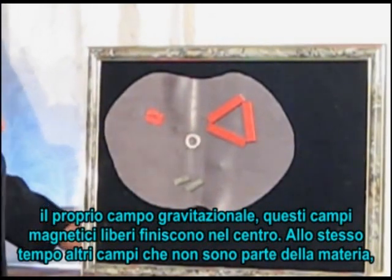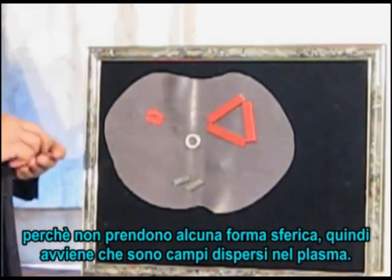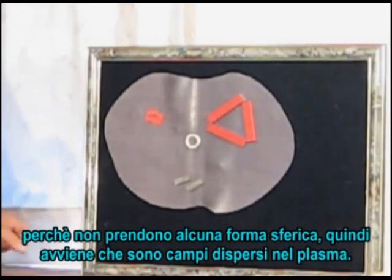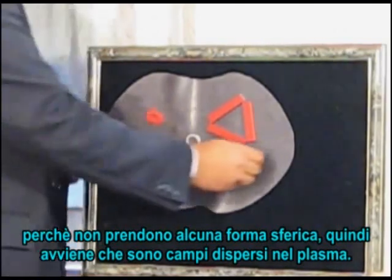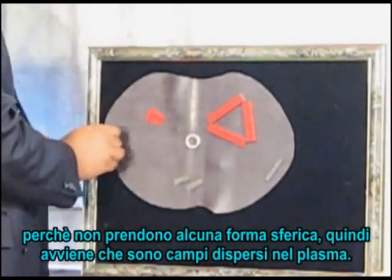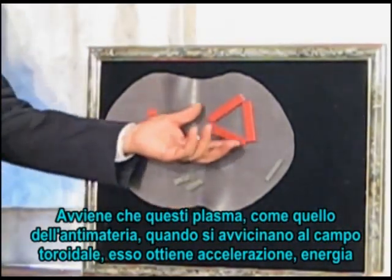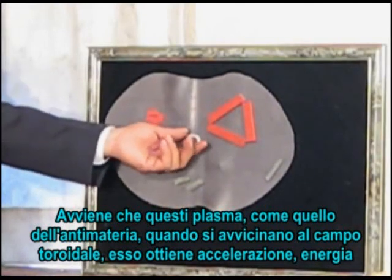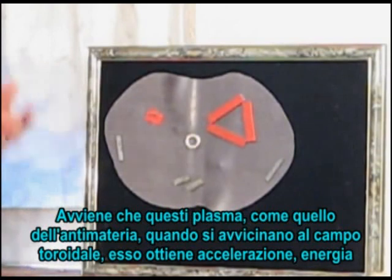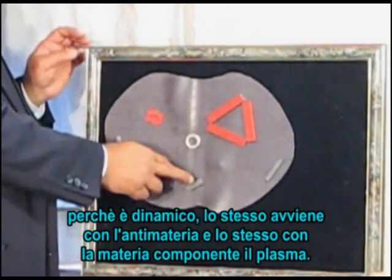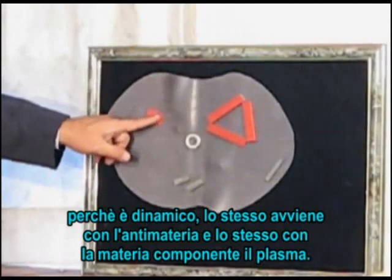At the same time, there are some other fields which are not actually part of the matter — because they are loose, they don't match in any shape or form. They are just loose fields within the plasma. When the plasma of the anti-matter comes close to the torus field, it gains acceleration and gains energy from it, because it is dynamic. The same happens with the anti-matter, and the same happens with the matter-component plasma.